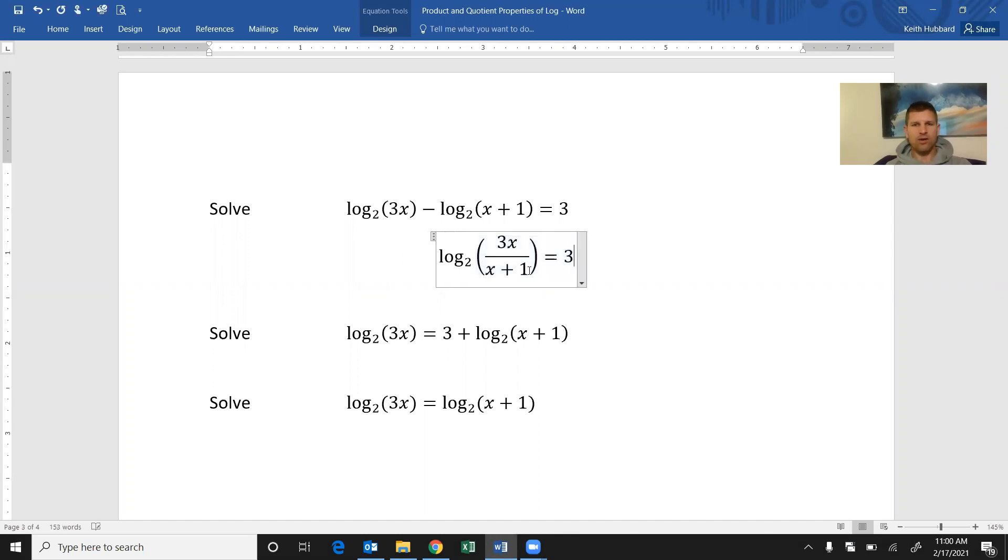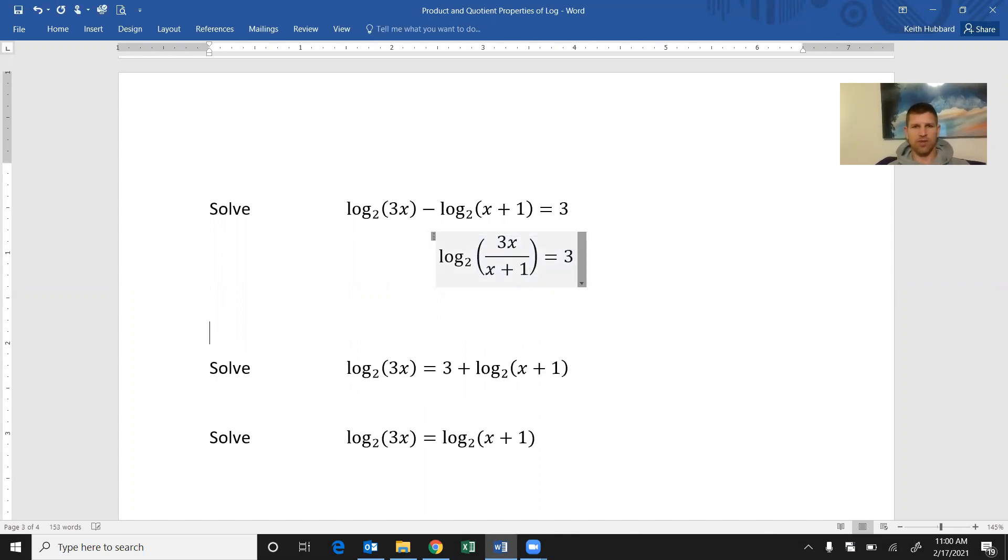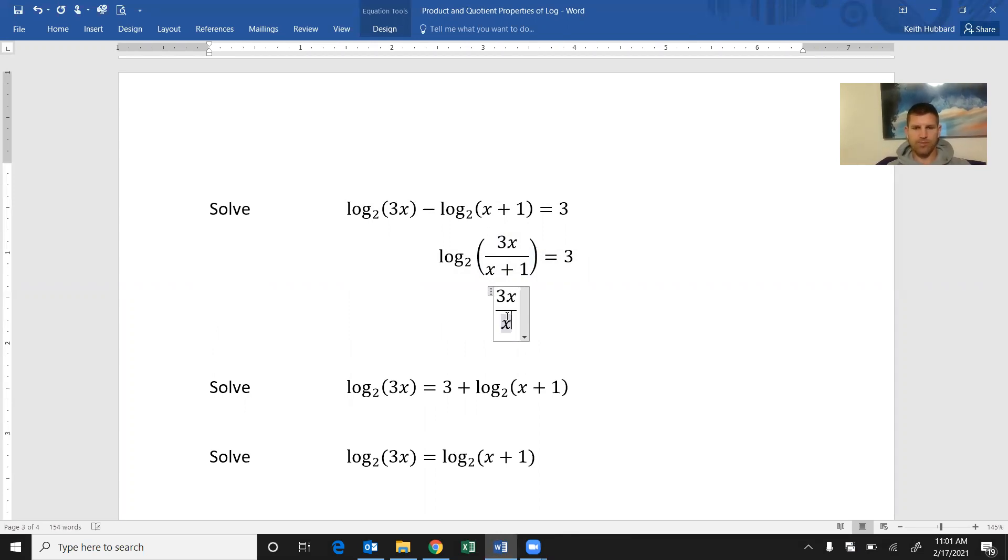Now what I've done here is I put this in the format so that it's a basic log equation. Can you see I've got a base, an input, and an output? I'm going to convert from a basic log equation to a basic exponential equation. How do you do that? You switch the base and the exponent. So I have 3x divided by x plus 1 equals 2 to the third. I've converted to an exponential equation.